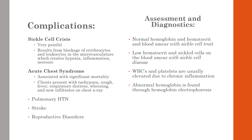Medical management of acute chest syndrome includes blood transfusions, antibiotics, bronchodilators, inhaled nitric oxide, and mechanical ventilation when acute respiratory failure occurs. Risk for acute chest syndrome can be reduced through influenza and pneumococcal vaccination, use of incentive spirometry during hospitalization with vaso-occlusive crisis, and blood transfusions perioperatively.